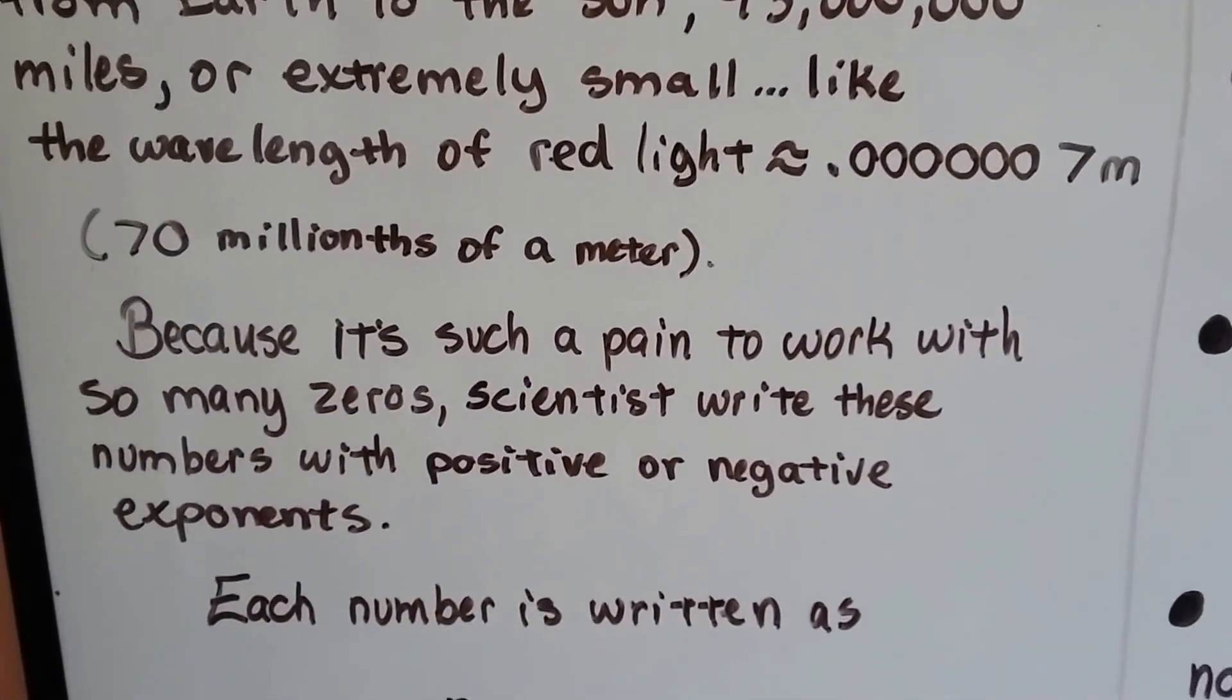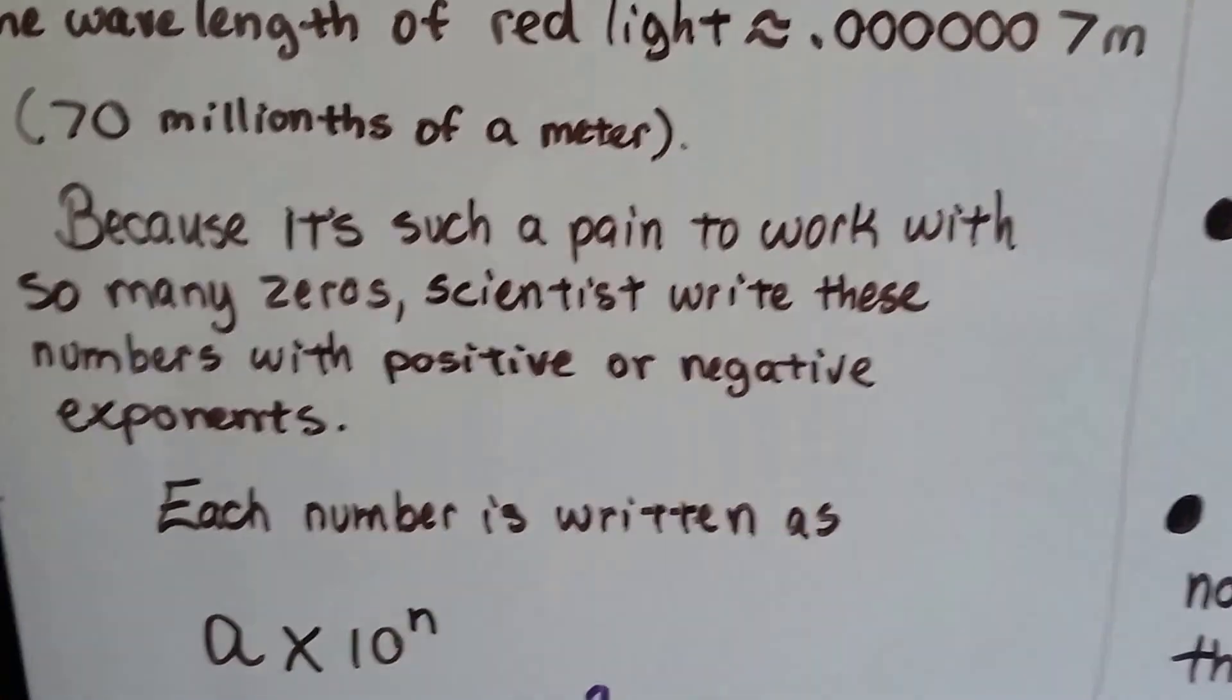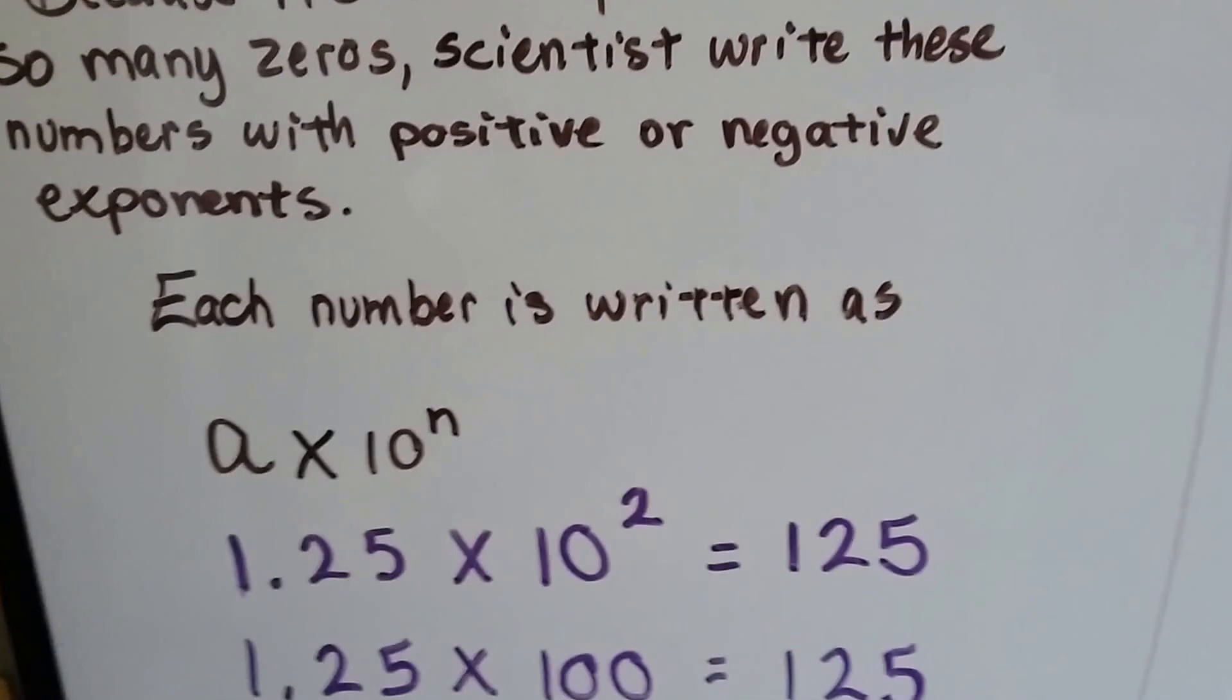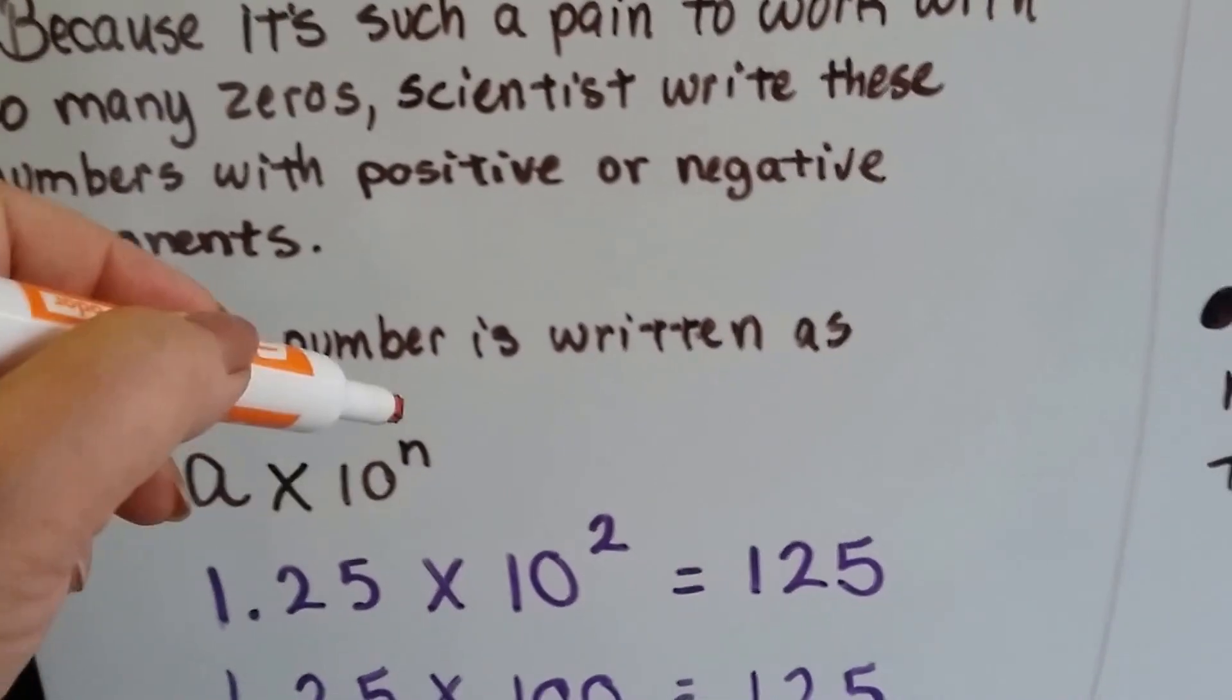Because it's such a pain to work with so many zeros, scientists write these numbers with positive or negative exponents and powers of 10. Each number is written as the number times 10 to a power.